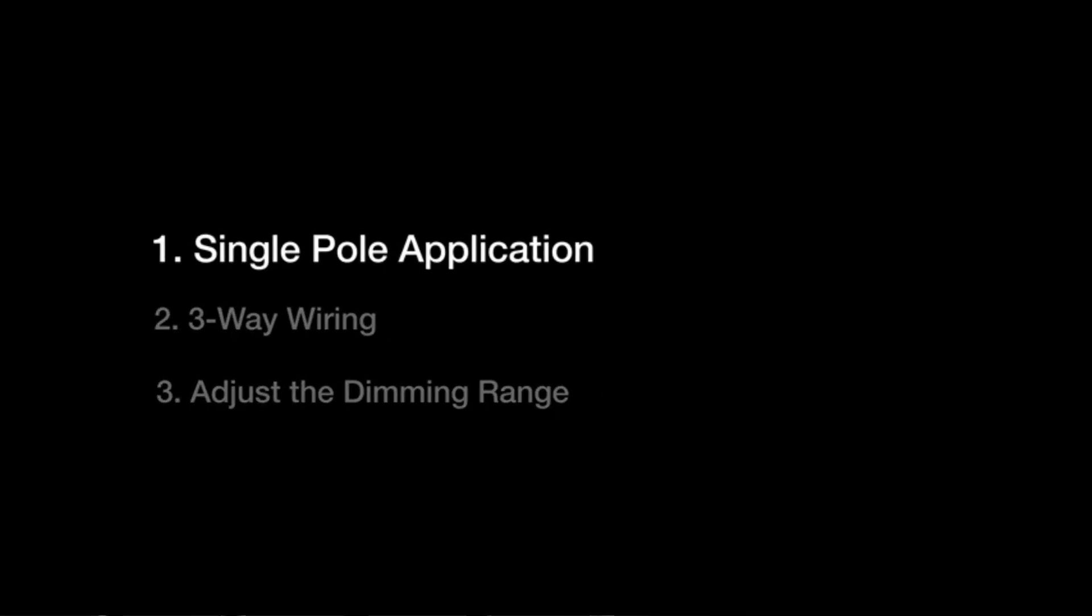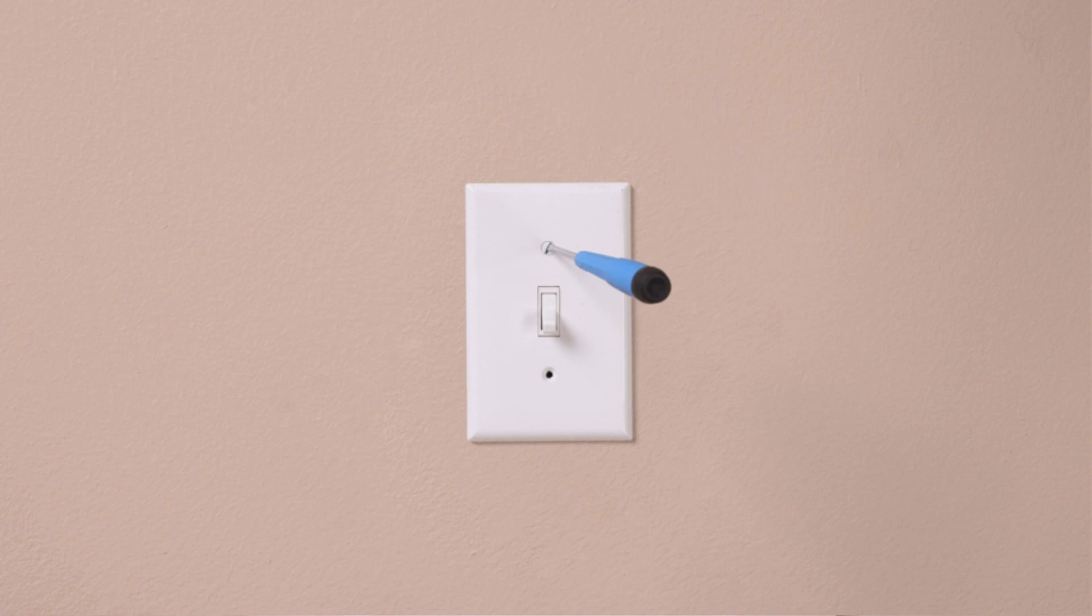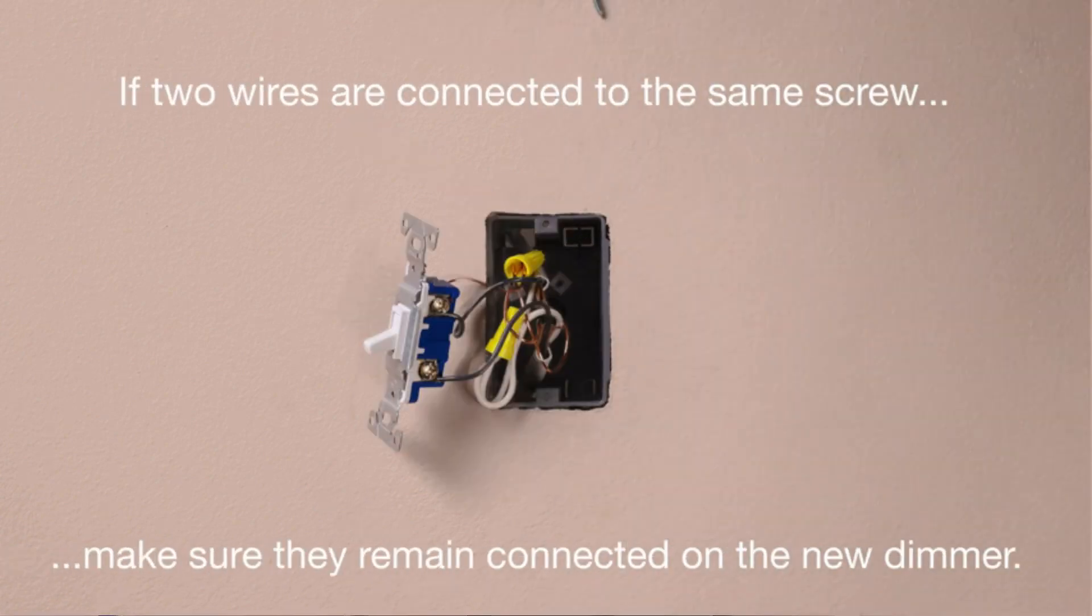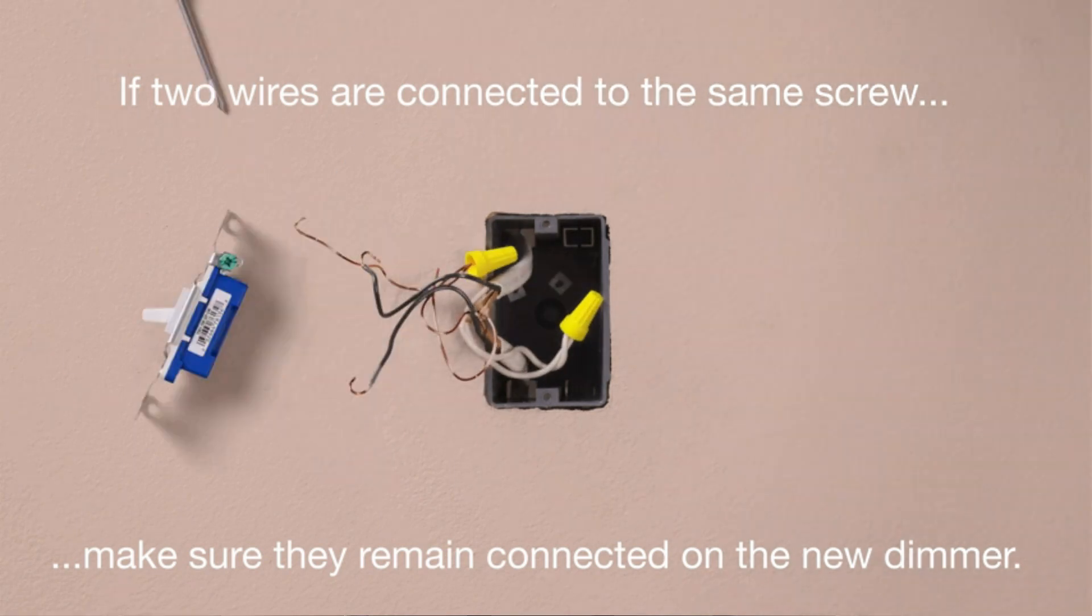With an operating voltage of 120 volts, this dimmer switch is compatible with most residential electrical systems, ensuring a hassle-free installation process. It is designed to deliver consistent performance and efficient power management.